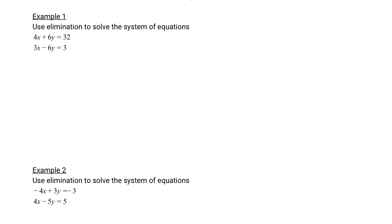What I'm looking for is one variable with the same number in front and opposite signs. We've got 6y on the top and negative 6y on the bottom. We already have that, so I'm going to add each column. 4x plus 3x is 7x. 6y minus 6y is eliminated. 32 plus 3 is 35. Now we have one equation and one unknown. I divide by 7 on each side. x equals 5.